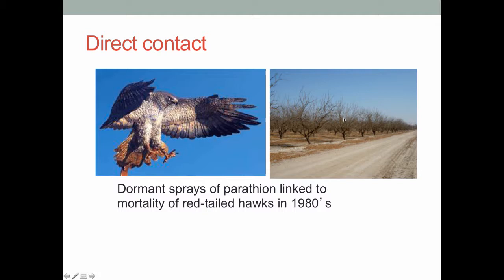Chemicals during dormant sprays can also cause trouble through direct contact. A study found that dormant sprays — primarily parathion — were causing mortality in red-tailed hawks because they would land on branches and absorb a little of the chemical through their foot pads. By absorbing a little over and over again, they eventually got a lethal dose. With the loss of popularity of parathion, we've actually seen a bounce back in hawk populations in the last couple of years.